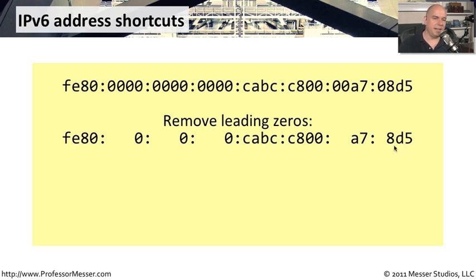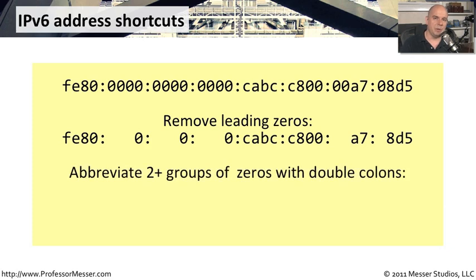Our next step then is to find places where we might be able to group some of these zeros together and replace them with a double colon. So any place there are two or more zeros, we can collapse those down. An important thing to remember is you can only do this once in an address. If there are different situations where you might have two zeros on this side and two zeros, sections of zeros on the other side, you can only pick one of those to abbreviate.